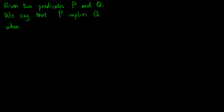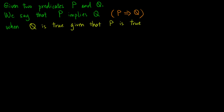Now, suppose we have two predicates p and q. We say that p implies q, written as p arrow q (with two horizontal lines), when q is true given that p is true. There are many alternative ways to say 'p implies q,' and it is important for us to recognize all of them.